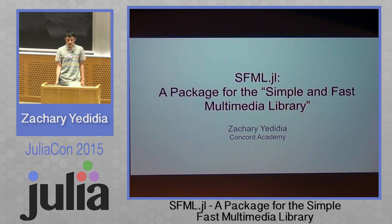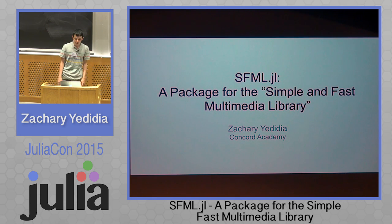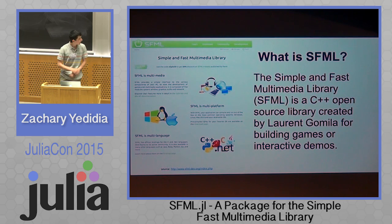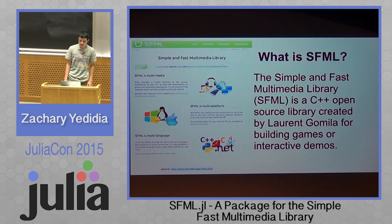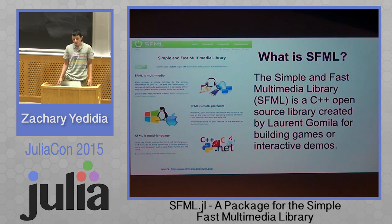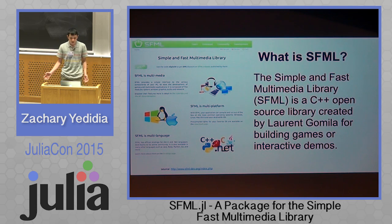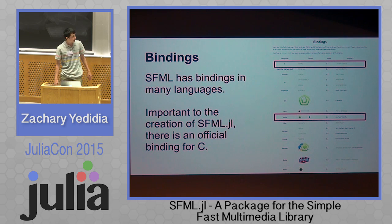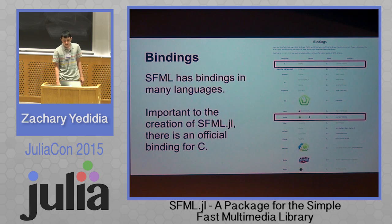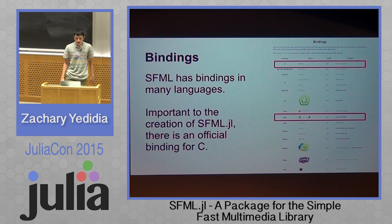I'm Zach, and I'm going to be talking about a package called SFML.jl, which I've been working on. It's a binding of the Simple and Fast Multimedia Library — a C++ open source library. It's a multimedia library, great for doing graphics. It also has audio and network support, and it runs on Mac, Linux, and Windows. It has a bunch of bindings, one of which is now Julia. Importantly, it has a C binding called CSFML, written by the author of the C++ version and officially maintained.